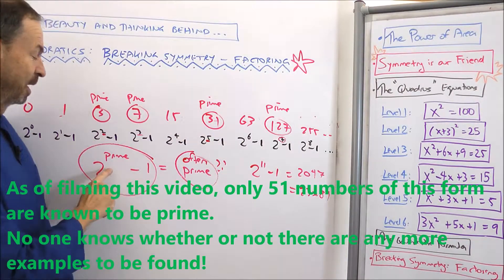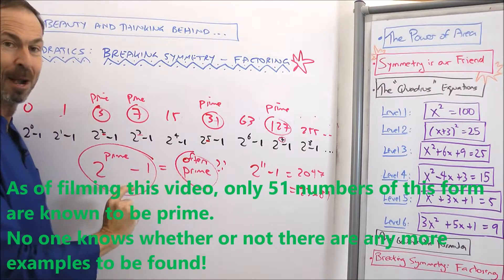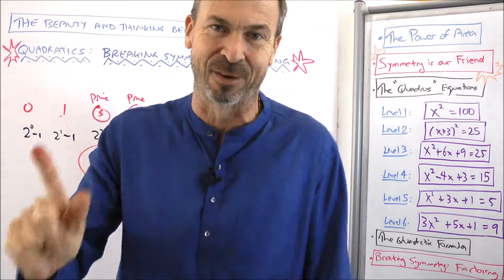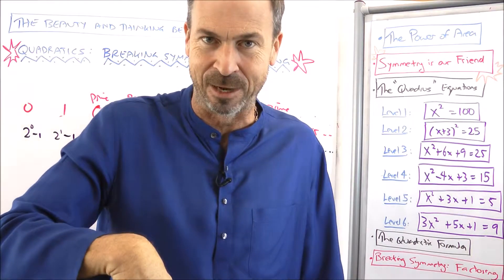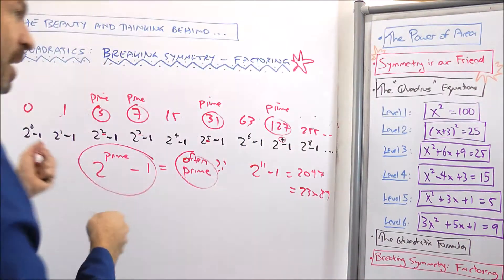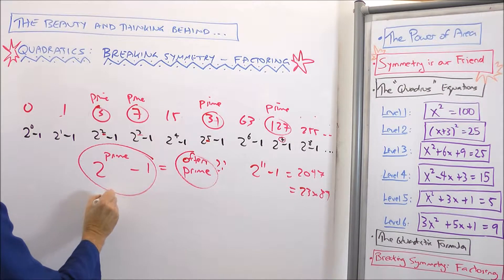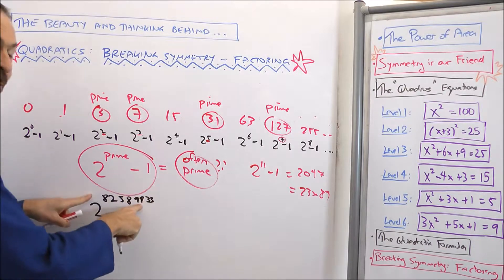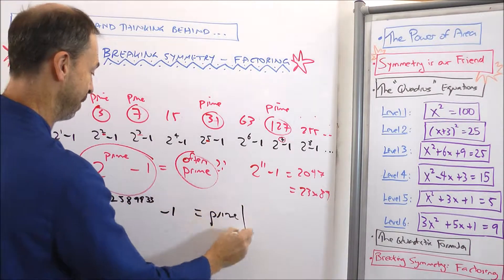There are only 51 examples known to mankind of 2 to the prime minus 1 being prime. In fact, the 51st example was just discovered a few months ago — as of the taping of this video, December 2018. It's this one: 2 to the 82,589,933. So that's a prime number — minus 1 is prime.